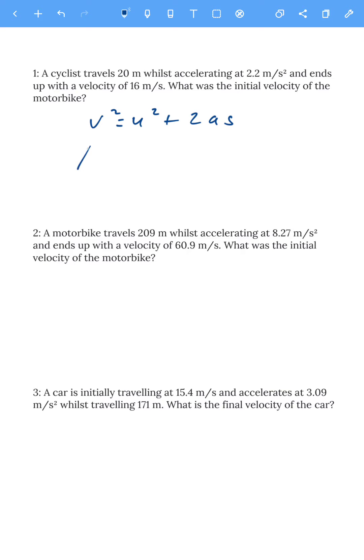So v is the final velocity measured in meters per second, u is the initial or starting velocity also measured in meters per second, a is acceleration measured in meters per second squared, and s technically is displacement. So if you started somewhere on a journey and went all the way around to there, the displacement is a straight line from where you started to where you finish, but most of the time at GCSE it's basically distance. And obviously it's measured in meters.